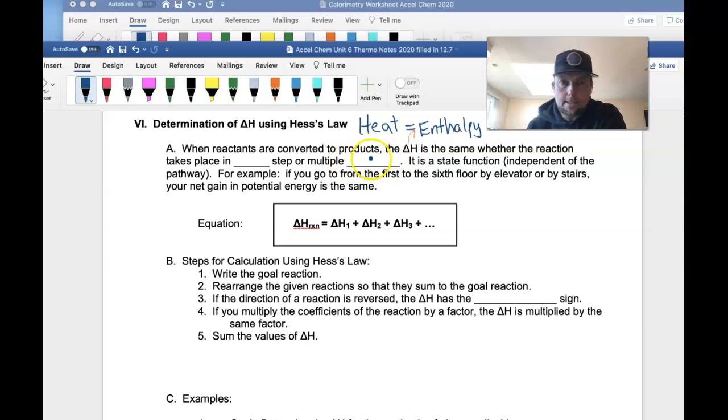What this says is the delta H is the same whether you're looking at a reaction that takes place in one step or in multiple steps. So if something takes place in multiple steps, then you can just add up the heats for all of those, and it'll be the same as if that same reaction happened in one step. This is what we call a state function, by the way, where the change in energy does not rely on the individual steps.